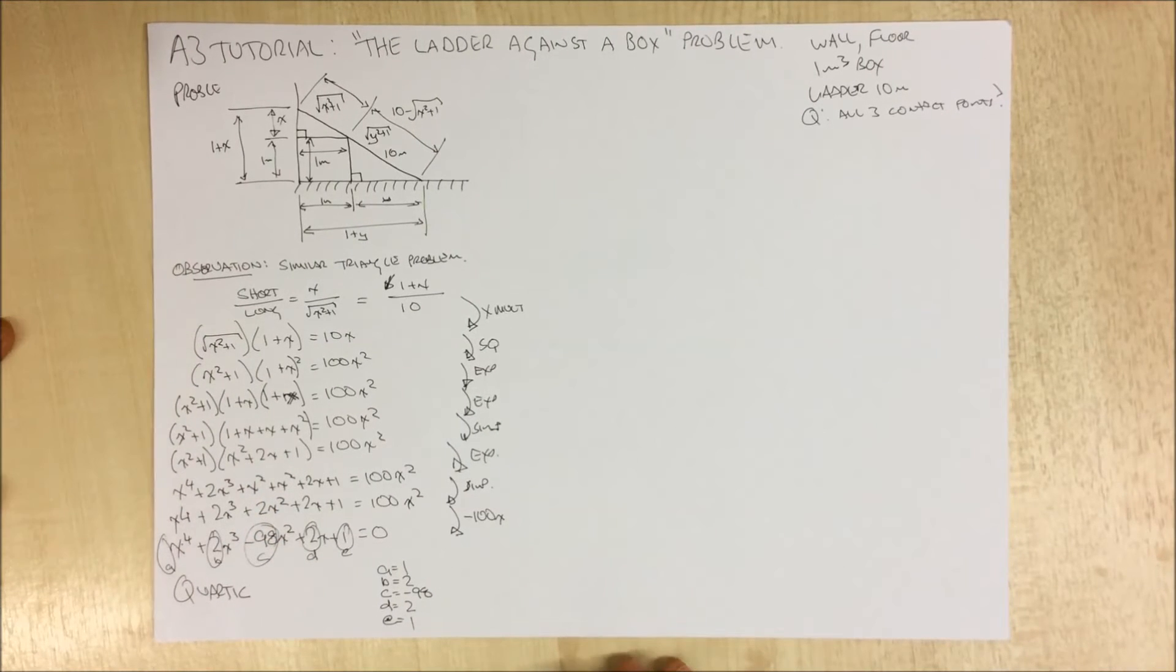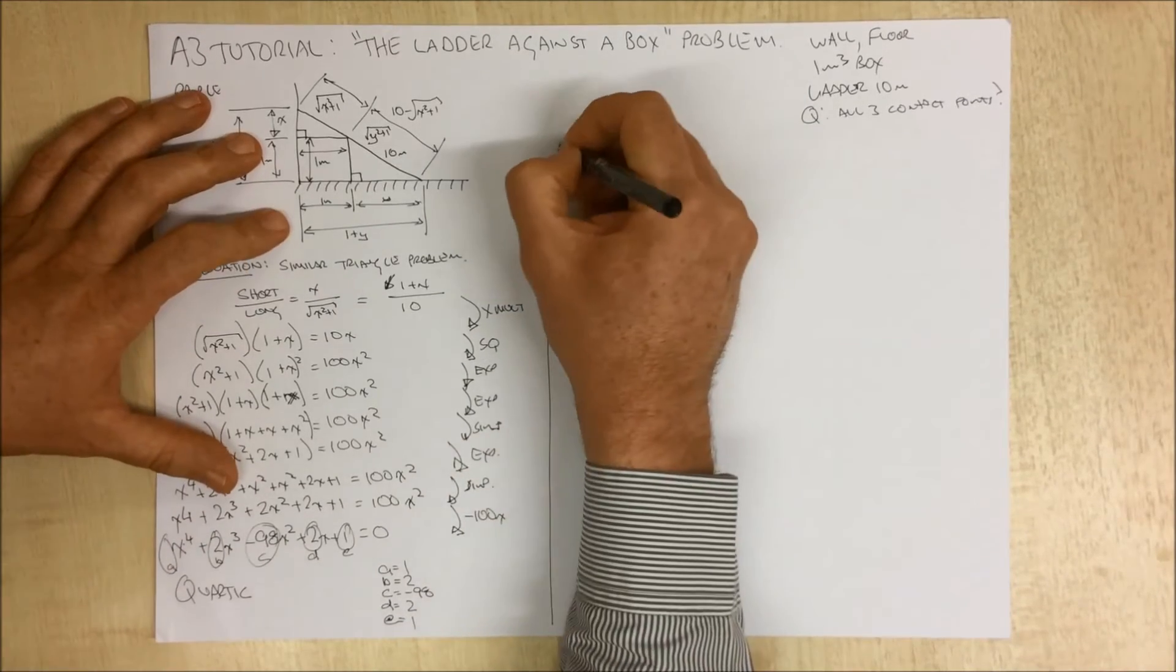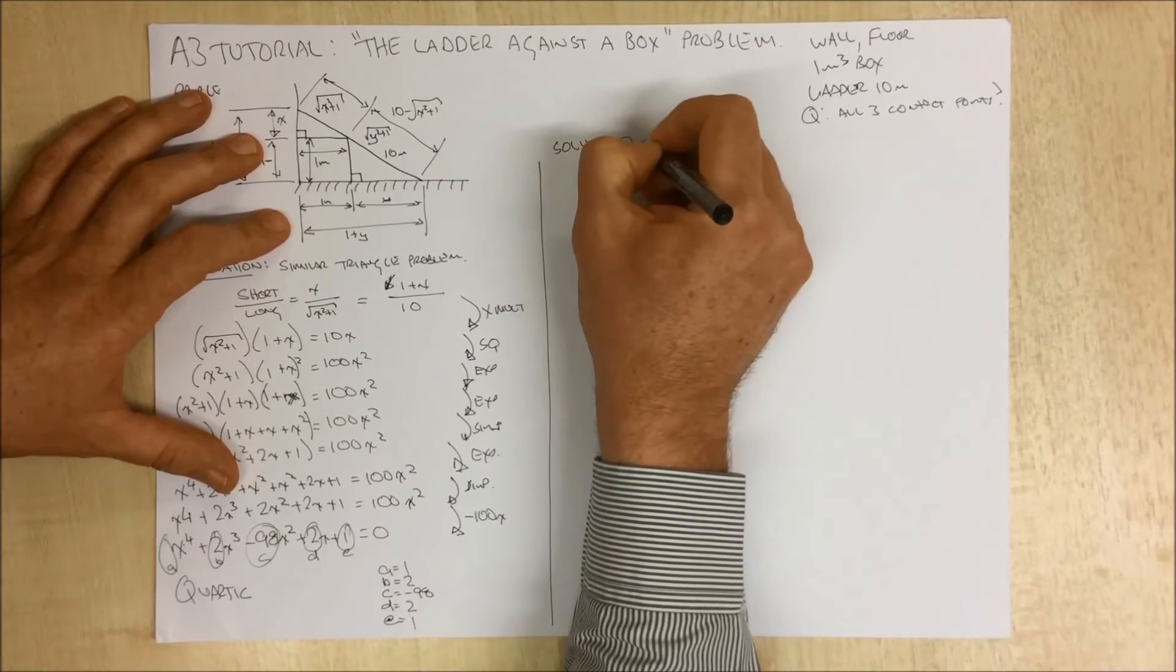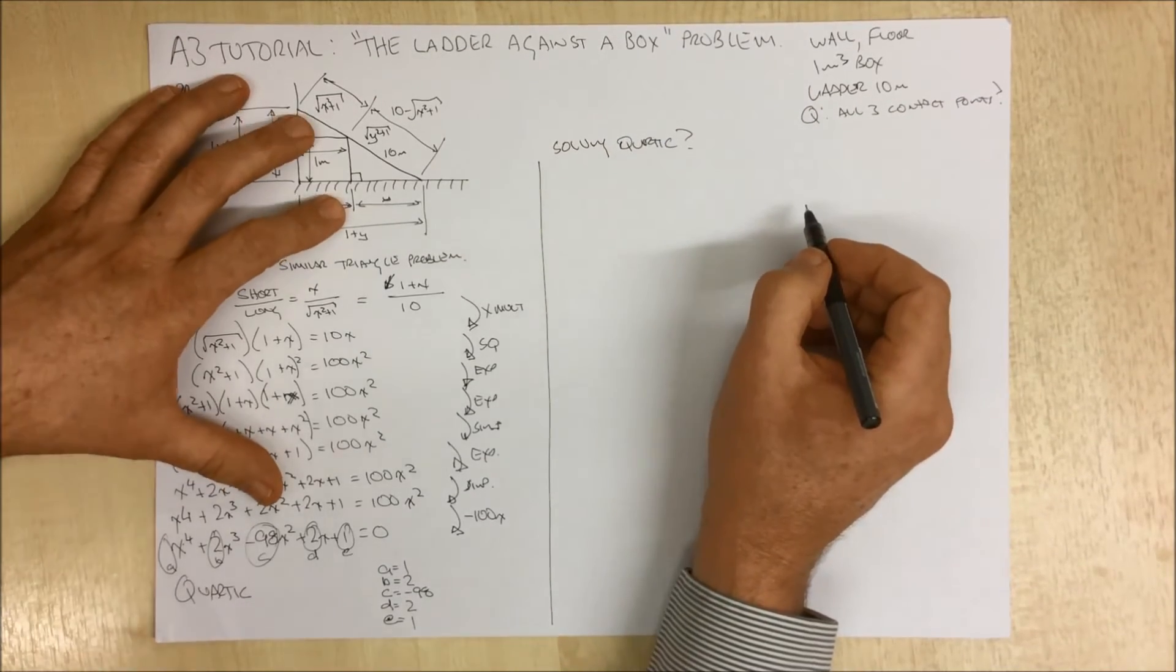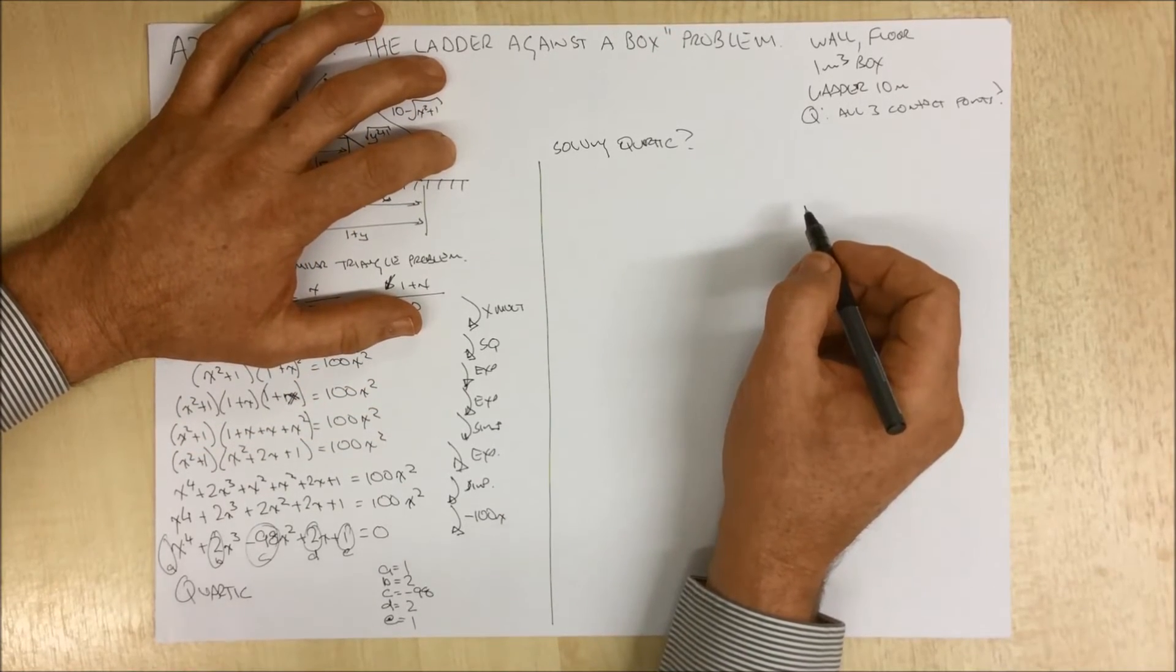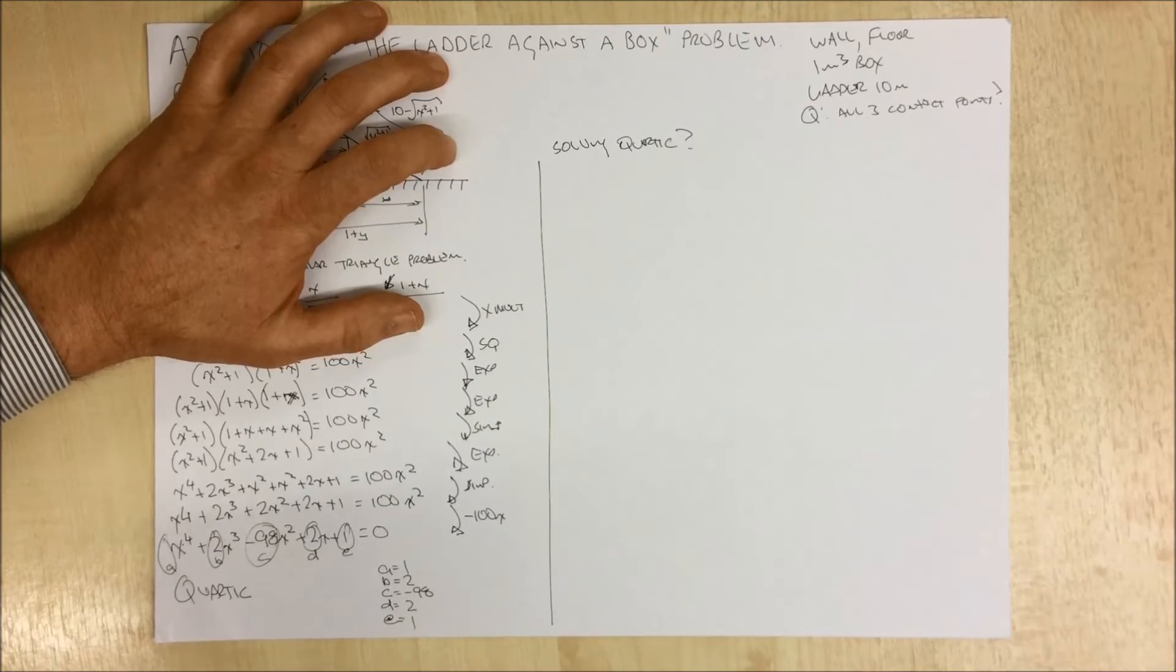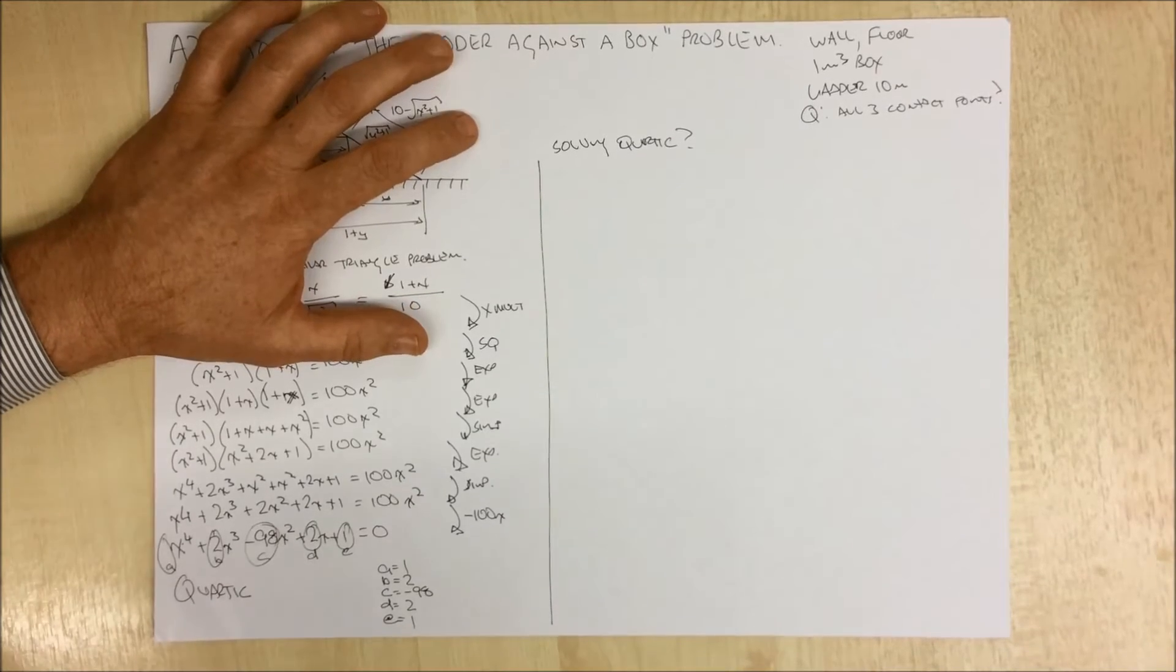Now the question becomes, how do we solve a quartic? There are two methods, well there are more than two, there are actually a lot. I'm going to look at two of them. The first one, we're not actually going to do it, I'll just tell you about it. When I've told you about it, you'll understand why I'm not going to do it.